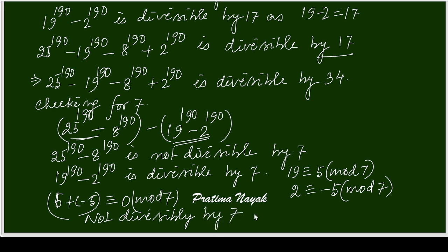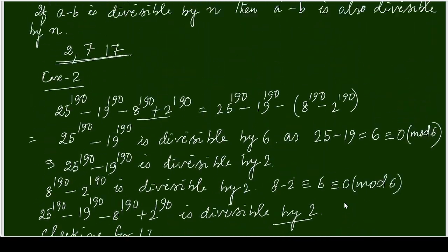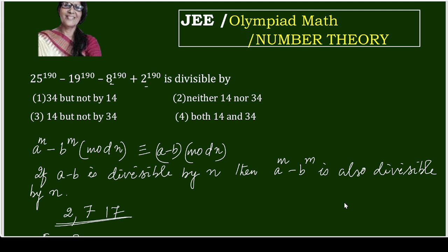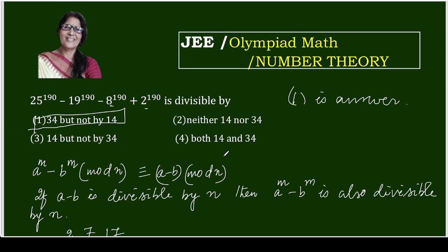Since the expression is not divisible by 7, it is not divisible by 14. So the answer is option 1: it is divisible by 34 but not by 14. I hope you enjoyed the solution — thank you for watching the whole video.